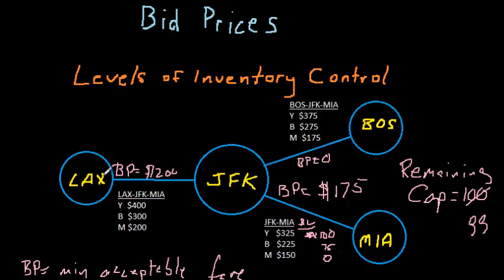Remember, bid prices exist at the leg level. There's one bid price for each leg in the network. Now we can evaluate O&D level decisions. I'm intentionally going to leave out all the math here. We'll do that in other videos, but I'm just going to explain the intuition here.